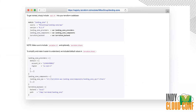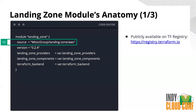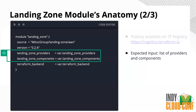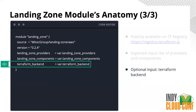The TFVars files are how you pass variables into this module. Walking through the anatomy of this module: you predefine the source that points to the public registry. You basically define the variables expected by the module — which are the list of providers and the list of components. Optionally, you can also define a variable for which backend to use.